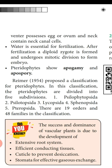Water is essential for fertilization. After fertilization, a diploid zygote is formed which undergoes mitotic division to form the embryo. The antherozoids and the egg fuse to produce a diploid zygote, which then undergoes mitotic division to produce the embryo.